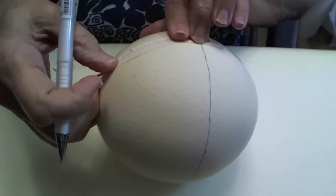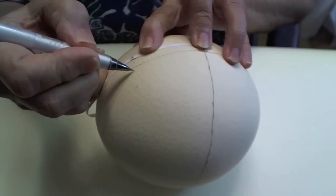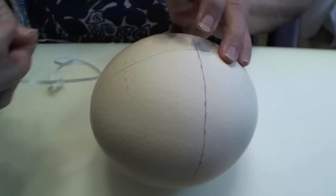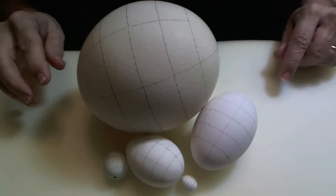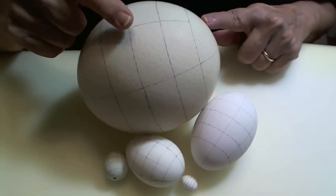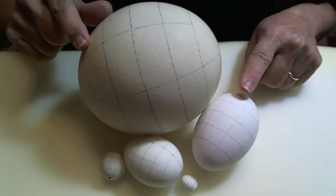If you need a more detailed explanation, please see my video on how to measure and divide an egg. At this point, you can see I have all my horizontal lines and all my vertical lines on each of the shells.